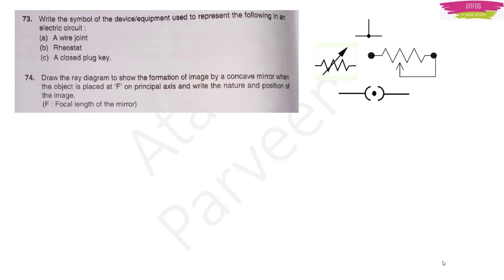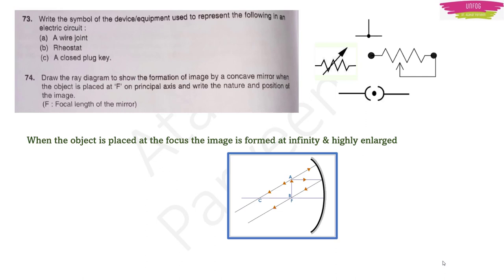Question 74: Draw the ray diagram to show image formation by a concave mirror when the object is placed at focus F on the principal axis. When the object is at focus, the reflected rays go parallel to the principal axis and the image is formed at infinity — it is highly enlarged and virtual. This is a 3-mark question.